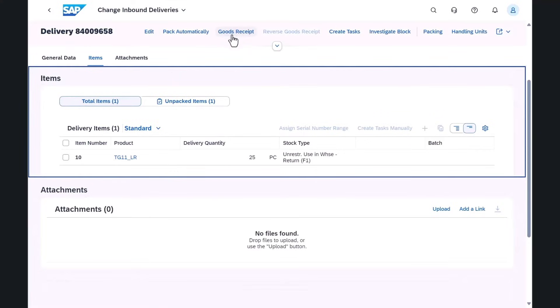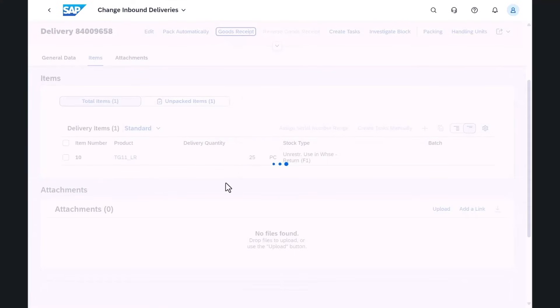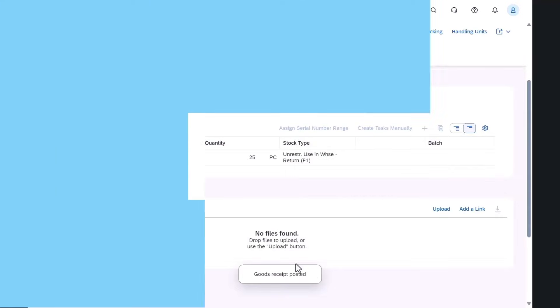The new process allows the return of items with a new delivery type LR including consignment stock directly into the warehouse now. This streamlined approach saves you time and effort ensuring a hassle-free return process.